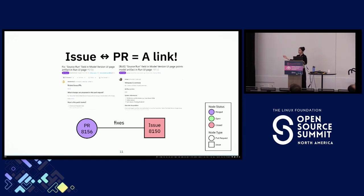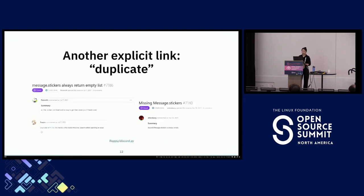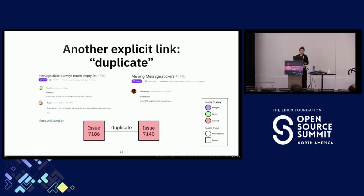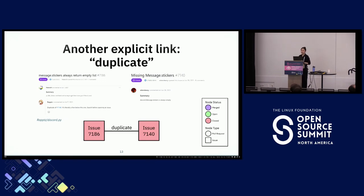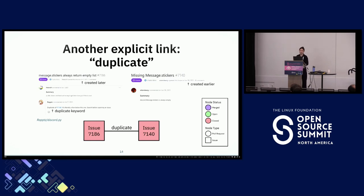Here's a visualization of those examples. We have issue 8150 that's being closed because it's been addressed by merged PR 8156. Here's another example from the discord.py project, this time with a duplicate link. Issue 7186 was marked as a duplicate of issue 7140, and you can notice that the issue on the right was both created earlier and uncovers that same problem of a missing link.